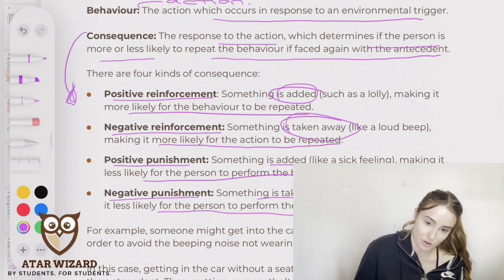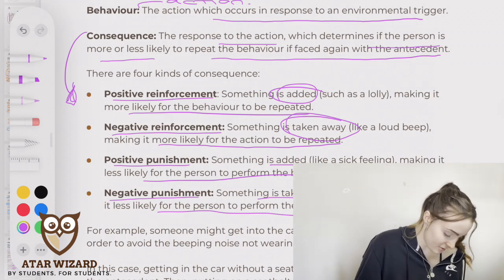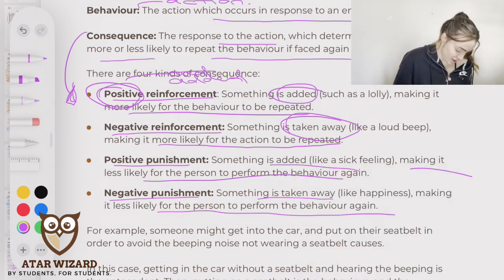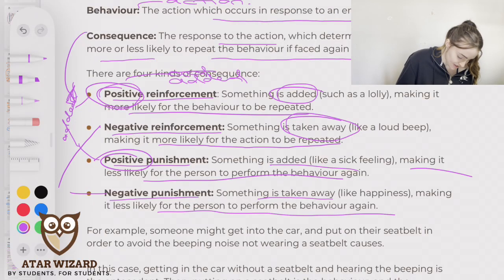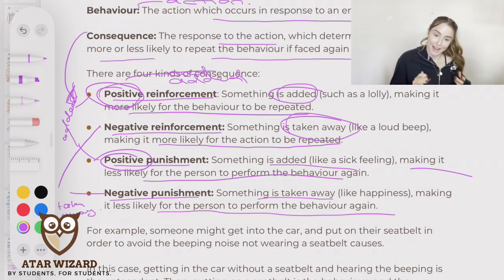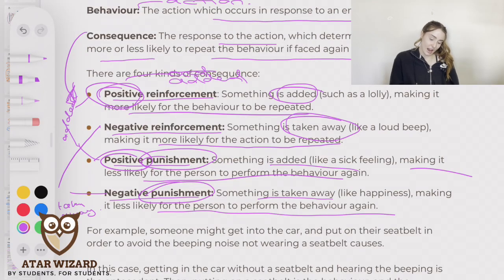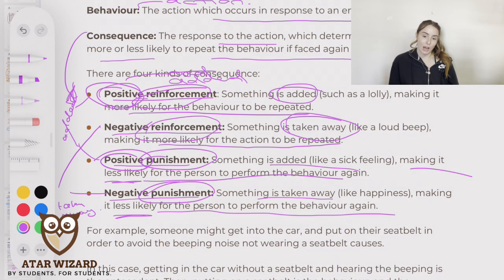A helpful way to remember this: when it says positive, something is added; when it says negative, something is taken away. Punishment means the person is less likely to repeat the action, and reinforcement means they're more likely to repeat the action.